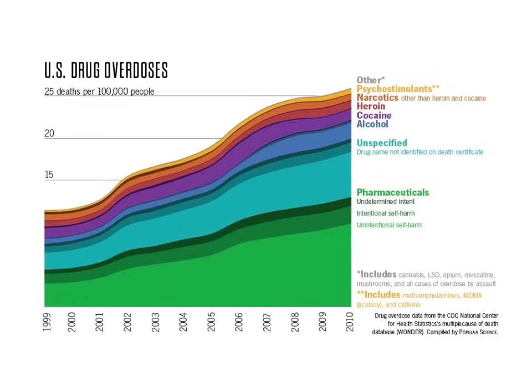This graph illustrates that, while the number of overdoses from illicit drugs has remained relatively constant, drug overdoses from prescriptions have skyrocketed in the past decade. This is iatrogenic, at least in part, and brings us back to the concept of responsible use.